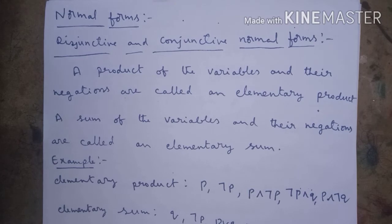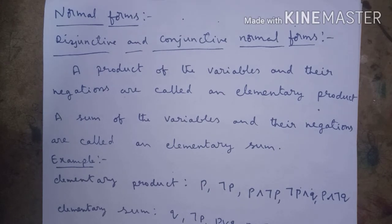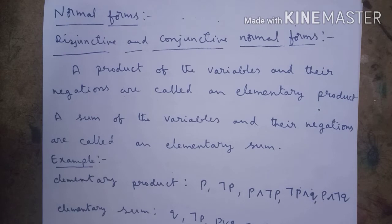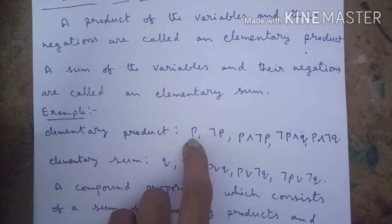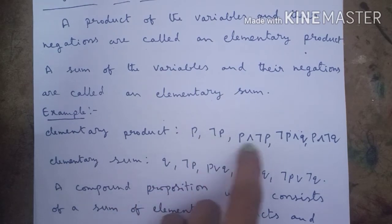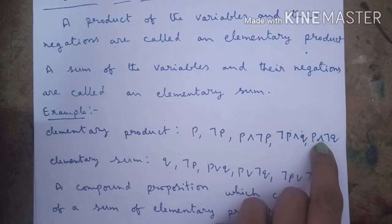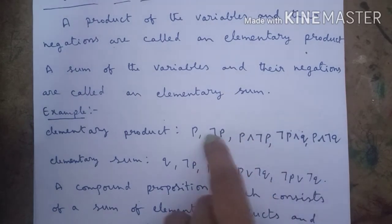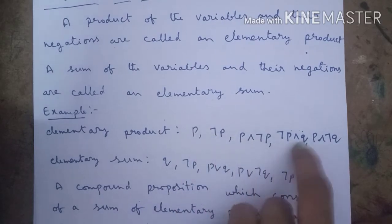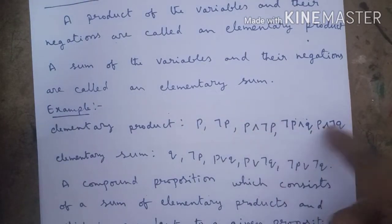Now, normal form — disjunctive and conjunctive normal forms. A product of variables and their negations are called an elementary product. For example, elementary products include: P, negation P, P and negation P, negation P and Q, P and negation Q. Elementary products contain only the AND symbol, which is the conjunction symbol.